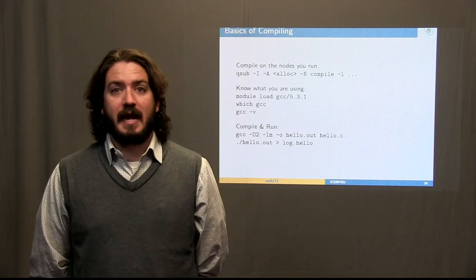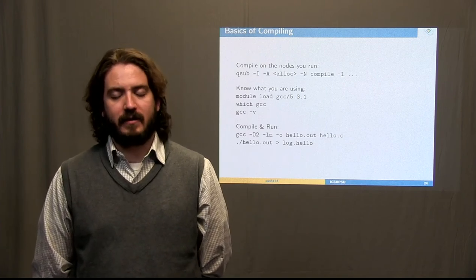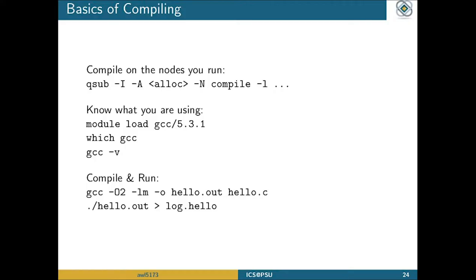One suggestion I have is that when you're actually going to be doing large or mini runs, compile on the nodes that you'll be running on. It's possible to submit an interactive job on ACI-B. This brings up a terminal window that looks like you're on ACI-I but you're actually on the compute nodes. You do this with qsub and then a minus capital I for interactive. Because you're not using a submission script, you have to put all of the PBS directives on the command line: use -A for the allocation, -N for a name, and -l for your wall time and memory request.